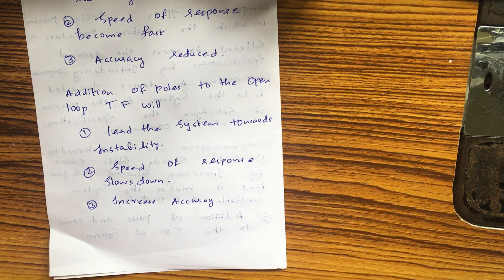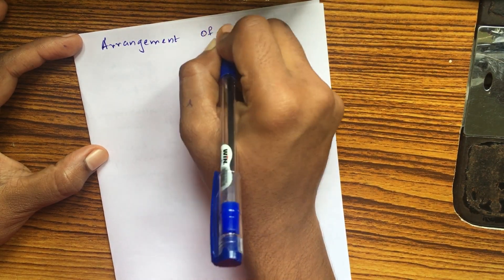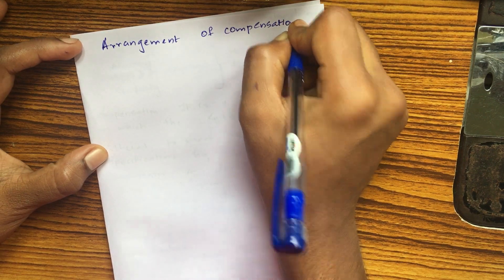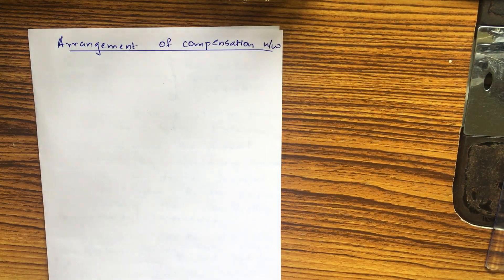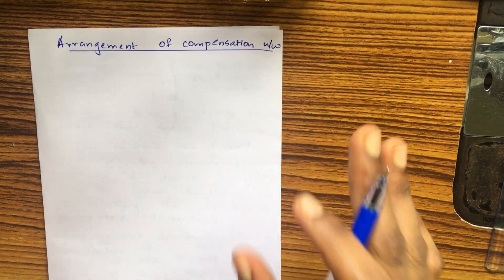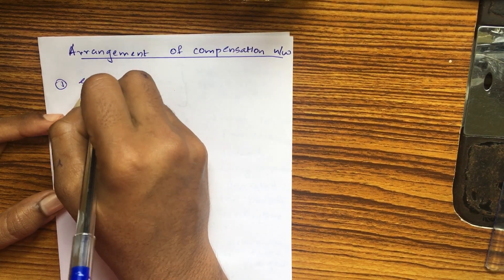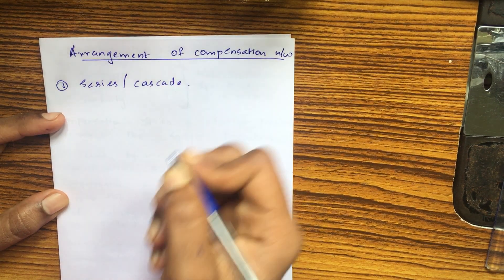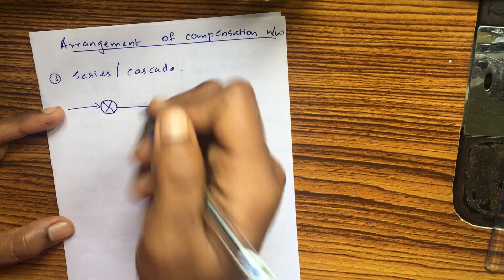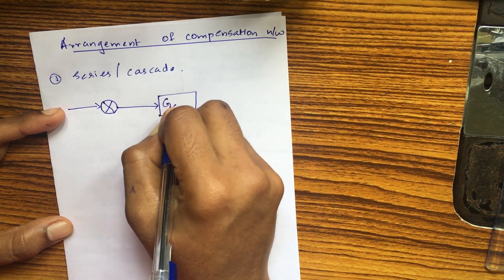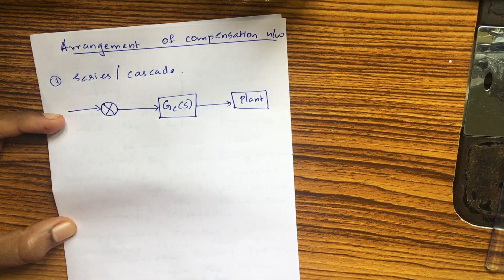Let's look at the arrangement of our compensation networks. There are different types. The first is series or cascade compensation. In series compensation, the compensator network GC is placed in series with the plant. We use the compensation network in series with the plant to form the series compensator.